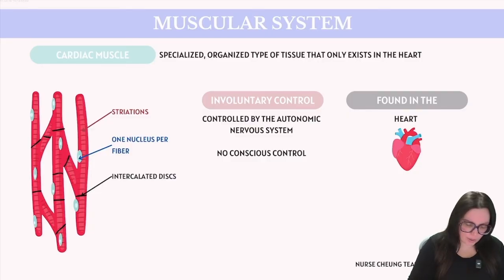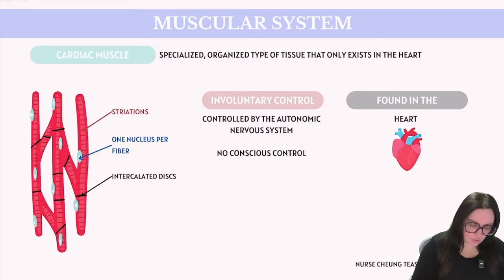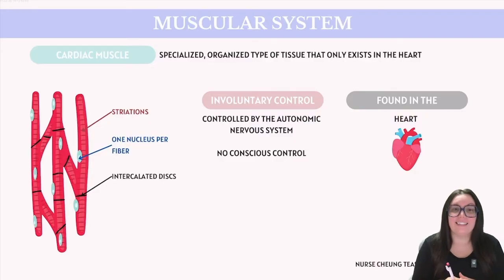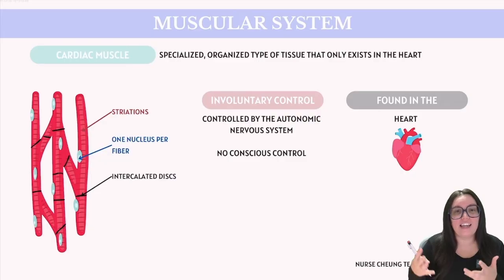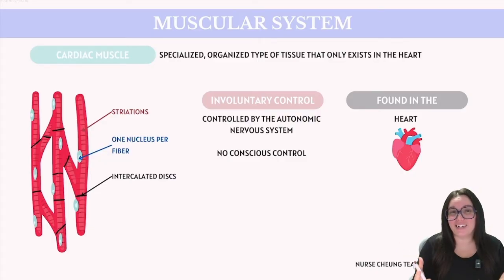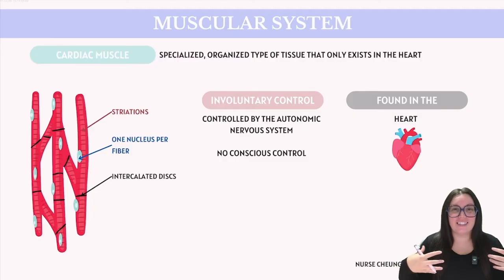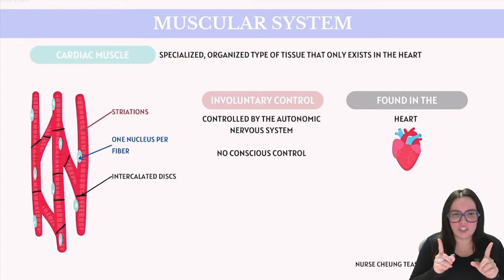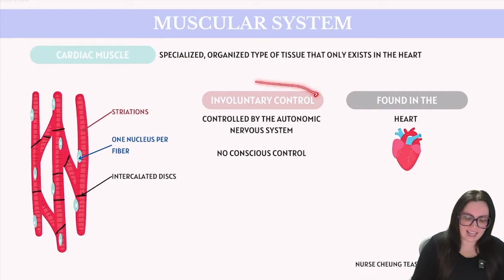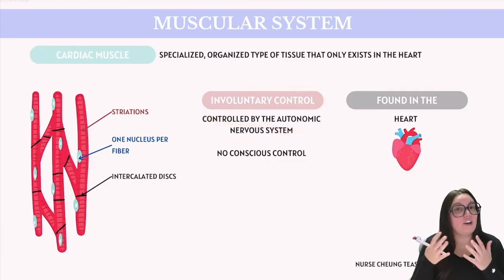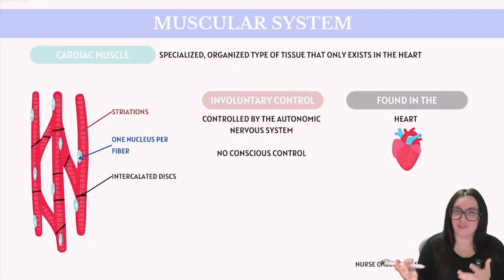Each cardiac fiber is going to contain a single nucleus. At the end of these fibers, you're going to see these intercalated discs, which are there to provide an organized wave-like pattern. This organized arrangement allows for efficient, coordinated contractions, which are essential for pumping blood throughout our body. Control of this muscle tissue is involuntary, meaning that it operates without our conscious control.